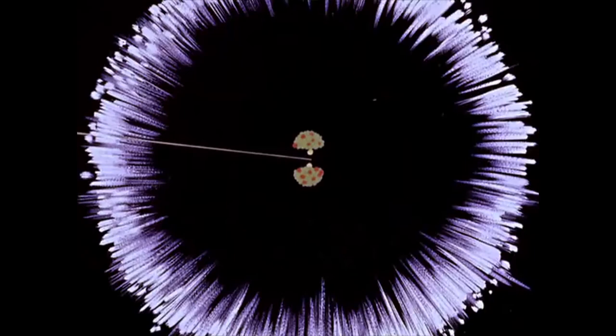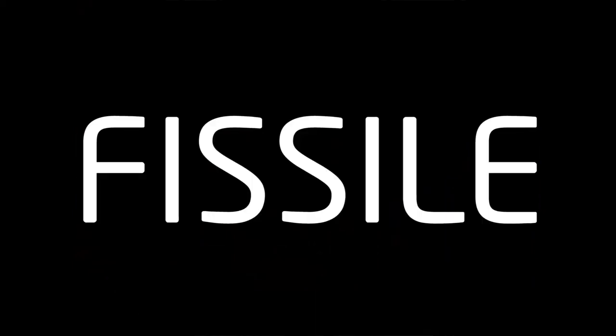Instead of a minor change from one isotope into another, the uranium atom split into two parts. When an atom is so unstable that it can be split into two by hitting it with a neutron, we call that fissile.